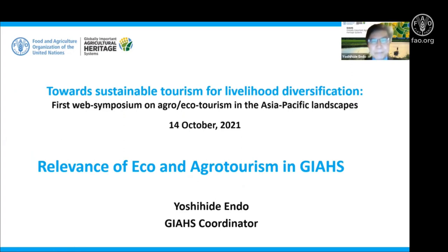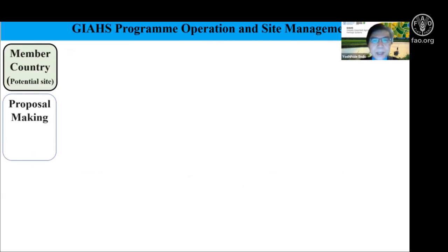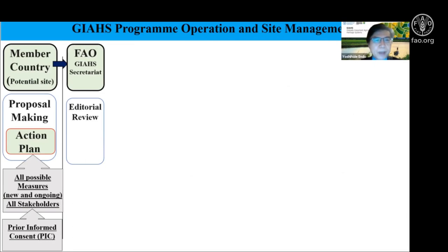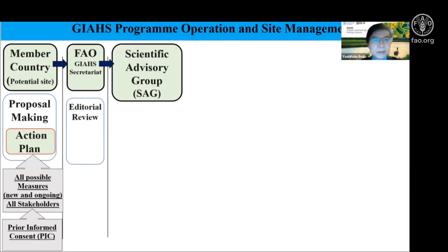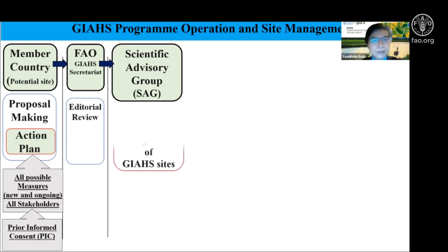I have just eight minutes so I'll move quickly. This is the entire GIS designation procedure. A proposal is made regarding a unique agriculture system and sent to FAO. FAO then sends it to an independent scientific advisory group, established under the GIS framework and nominated by the FAO Director General, who makes the evaluation and final selection of the GIS site — a process similar to UNESCO World Heritage.